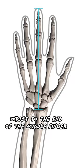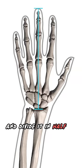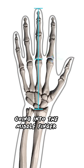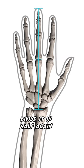Take the distance from the wrist to the end of the middle finger and divide it in half. That's the end of the palm going into the middle finger. To find the three finger joints, divide it in half again and again.